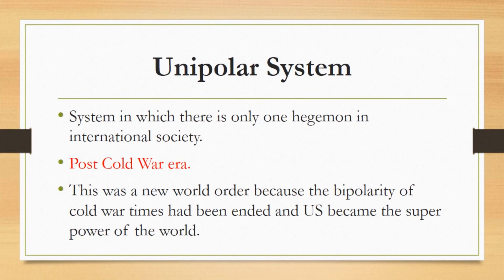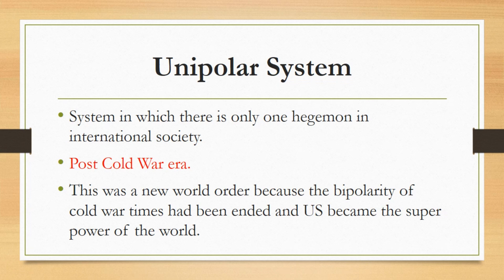The first type is the unipolar system, which is a system in which there is only one hegemon in international society. This one hegemon is a dominant power with influence over all the states of the world. At the end of the Cold War in the 90s, the US emerged as the only hegemon of the world. This was a new world order, as the bipolarity of the Cold War had ended and the United States became the superpower, putting its influence over all other states.